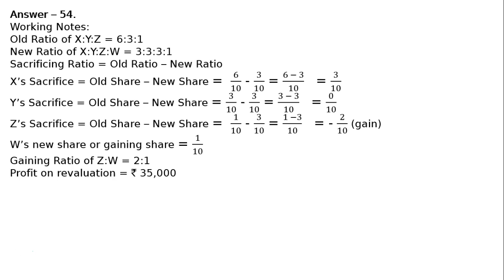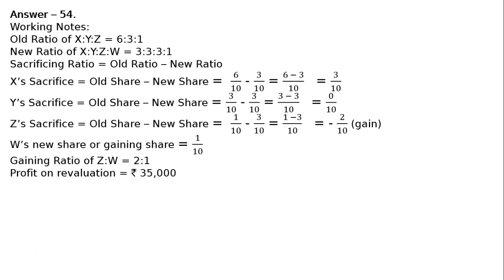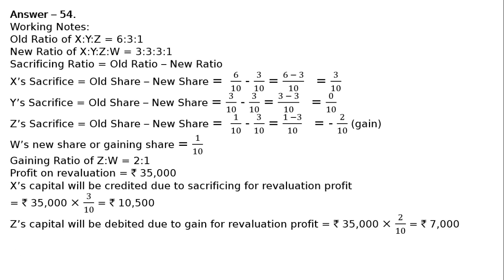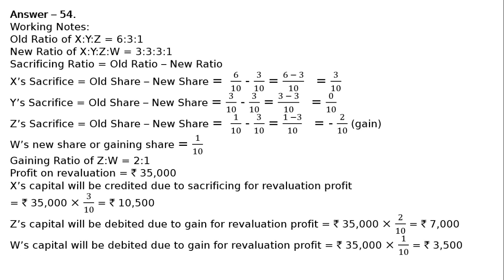Profit on revaluation as per the question is Rs 35,000. X's capital will be credited due to sacrifice for revaluation profit: Rs 35,000 × 3/10 = Rs 10,500. Z's capital will be debited due to gain for revaluation profit: Rs 35,000 × 2/10 = Rs 7,000. W's capital will be debited due to gain for revaluation profit: Rs 35,000 × 1/10 = Rs 3,500.